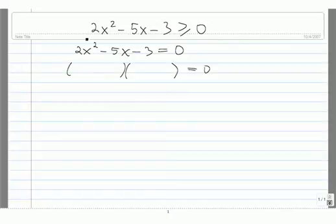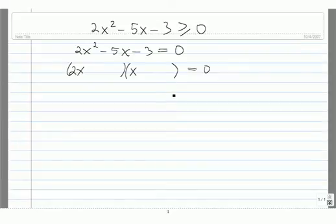Because of the 2x squared, we know that one of these factors has to be 2x and one has to be x. And because of this 3, we know that one of these has to be 1 and one has to be 3. So I think that putting the 3 here and the 1 here will give us what we need.